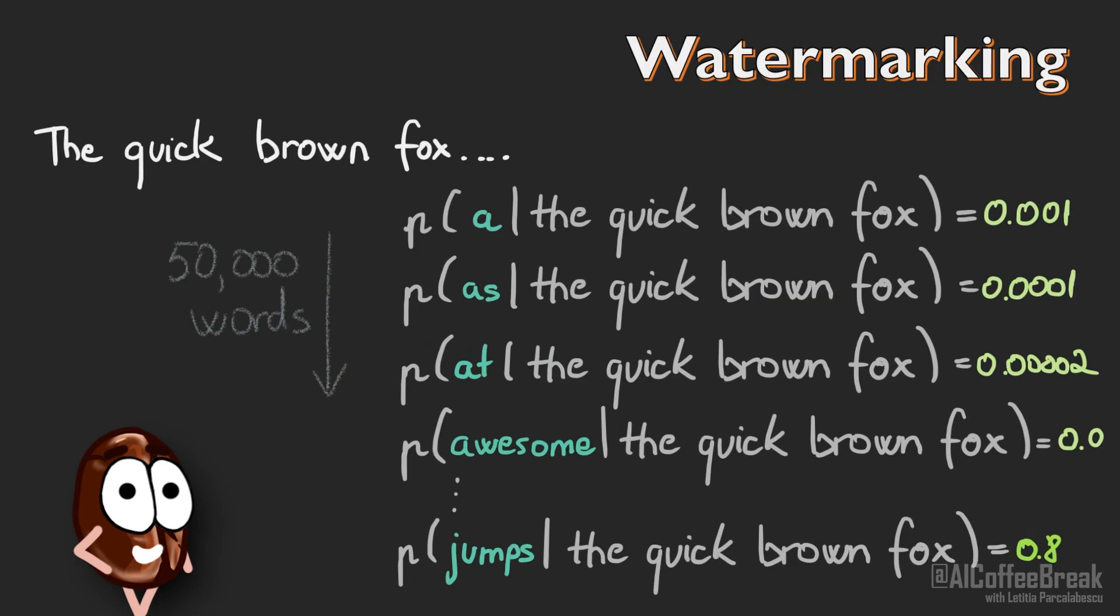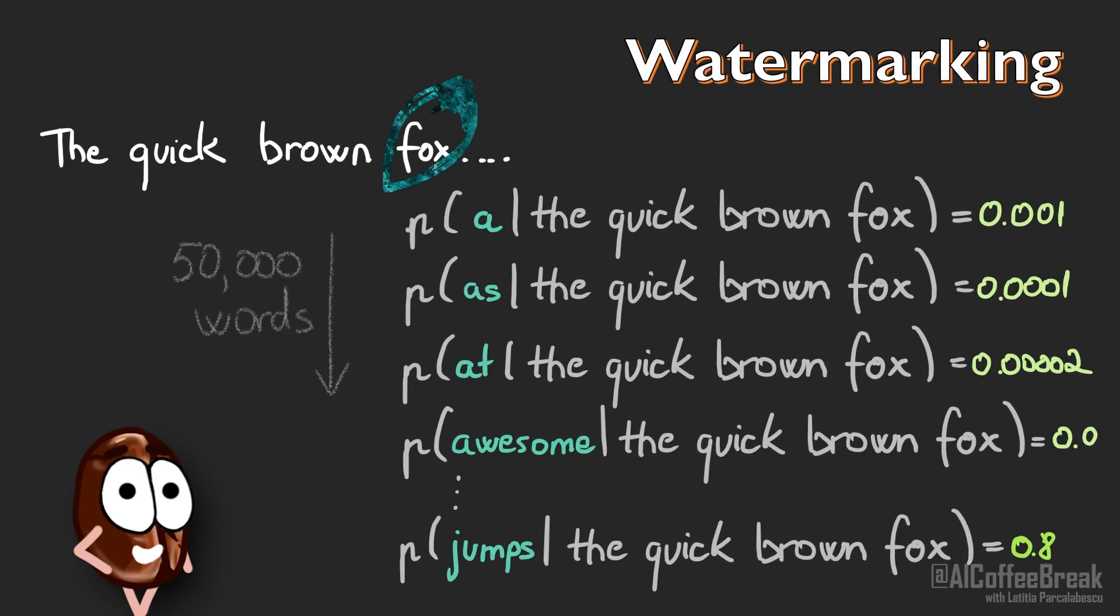But brute forcing their way to the blacklist means that the attacker queries the API a lot of times with the same input, in which case the API provider can monitor and detect this malicious activity. But now let's talk about cases of attacks where watermarking cannot discern whether text was human or AI written.